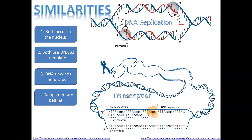We find that there is complementary pairing in both processes — albeit the nucleotides differ in each — but complementary pairing occurs on the template in both. Lastly, both processes are controlled by enzymes, albeit different enzymes. It's important to know these similarities because they apply to either process and can be used as part of your answers.